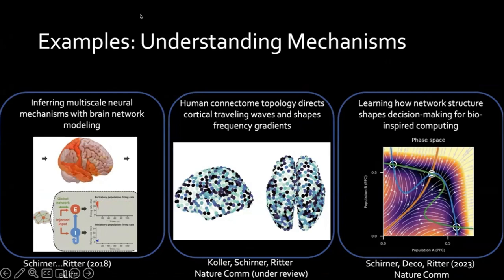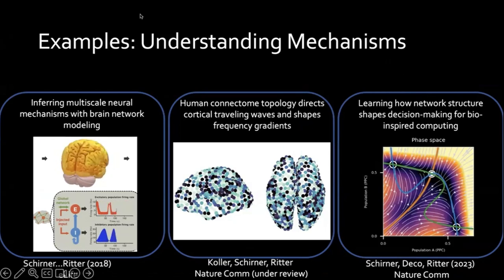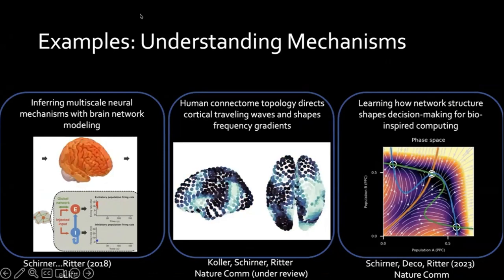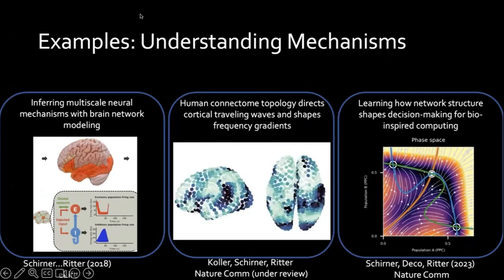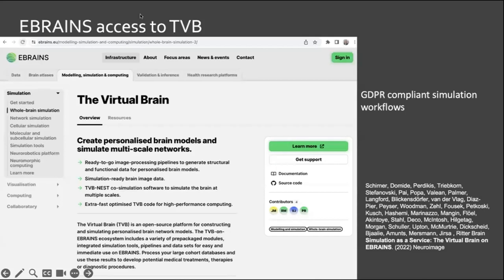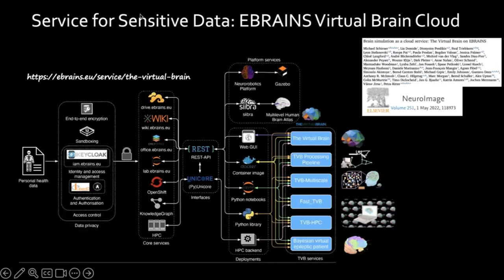Our prime focus with brain network modeling is to understand mechanisms — a brain model integrates all knowledge we have about brains and expresses it in a mathematical or computational way, using it as a computational microscope to probe into brains and our theories about how they work. eBrains offers easier access to these services, deployed as container images, Python notebooks, Python libraries, or dedicated high-performance implementations for massively parallel brain simulation over many parameter sets.